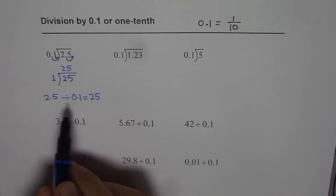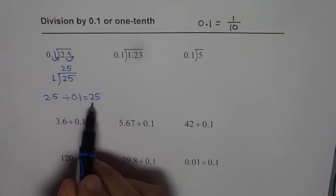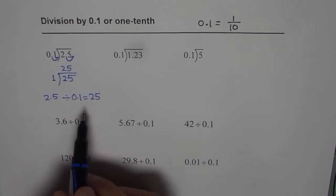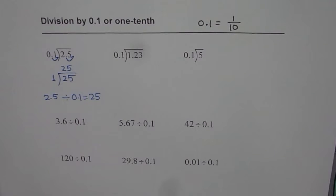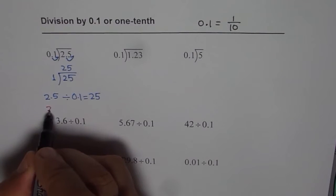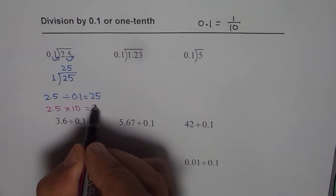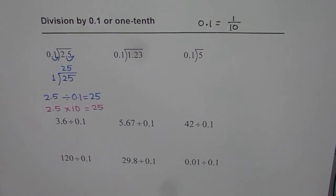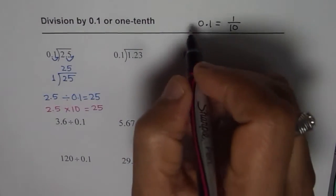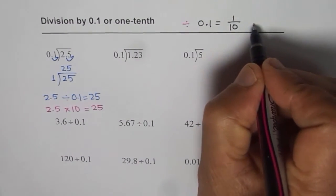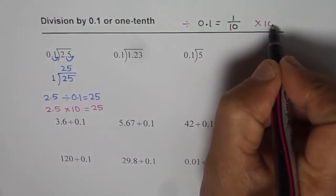As you can see, dividing by one-tenth gives you a higher number. It is same as times 10. Can you see that? Dividing by one-tenth is same as 2.5 times 10, which is also 25. So what we learn here is that when you divide by tenth you get a higher number and it is same as dividing by tenth is same as times 10.